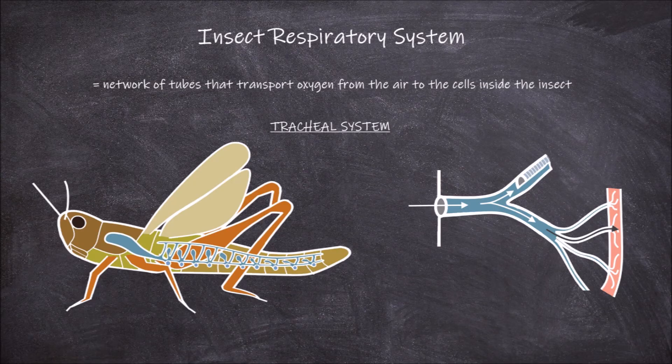In small insects, the air moves through the tracheal system through passive diffusion, but in larger insects, active ventilation occurs.